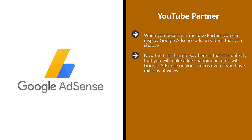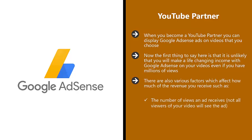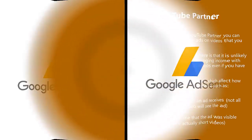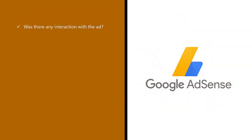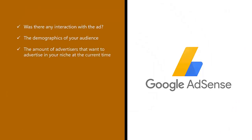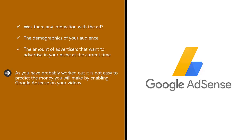It is unlikely that you will make a life-changing income with Google AdSense on your videos, even if you have millions of views. There are various factors which affect how much revenue you receive, such as: the number of views an ad receives, the length of time the ad was visible, whether there was any interaction with the ad, the demographics of your audience, and the number of advertisers wanting to advertise in your niche.